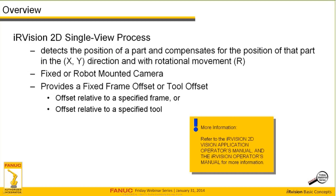The 2D single view process can use either a fixed or robot-mounted camera. For our tutorial, we'll concentrate on the fixed camera, but all the information provided today can be applied to the robot-mounted camera. The single view vision process provides either a fixed frame offset or a tool offset. Those offsets are relative, in the first case, to a specified user frame that you've correctly taught, or an offset relative to a specified U-tool that has been correctly taught.